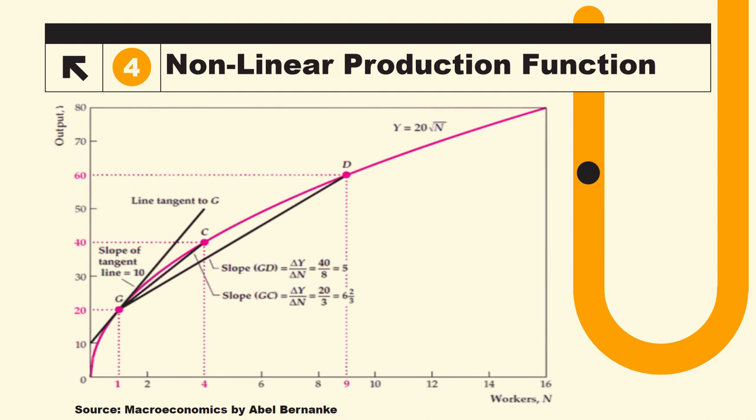Take this point at D. Number of workers are 9. And according to this production function, taking the under root of 9 that is 3, 3 into 20 that is 60. So 9 units of worker are giving us 60 units of output.